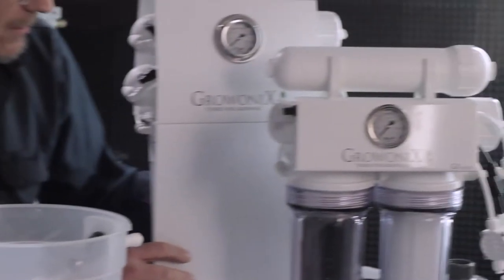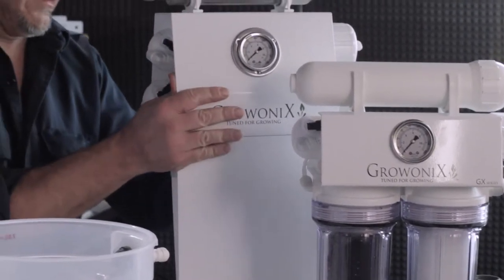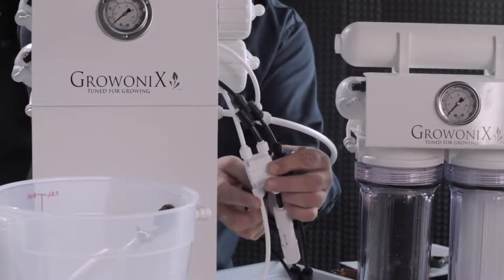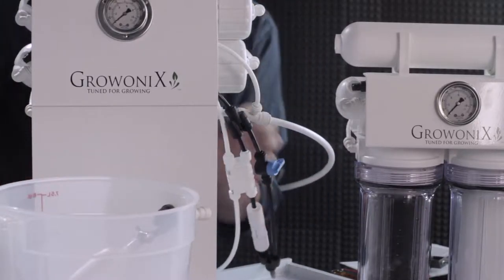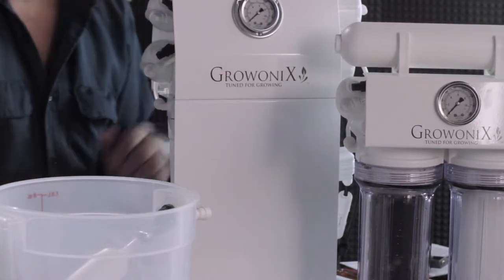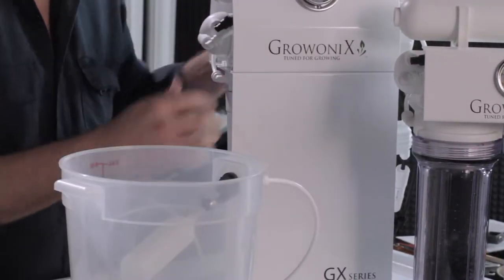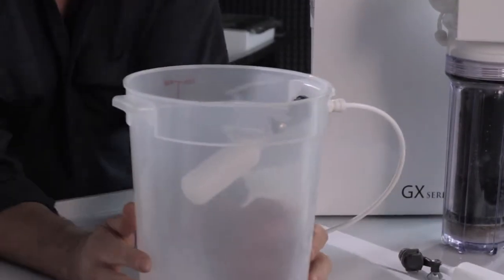Then, you're going to take the RO output of your water filter. That RO output is always on the permeate side of the ASV, the white line side. Grab that line, and just run it over to the float valve, plug it in. Like that. Now we're ready to fill this tank.